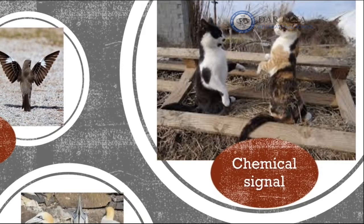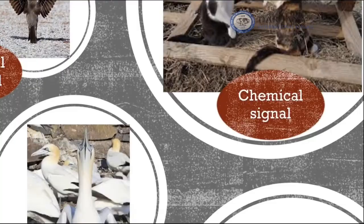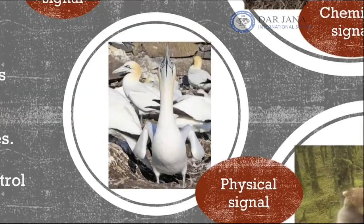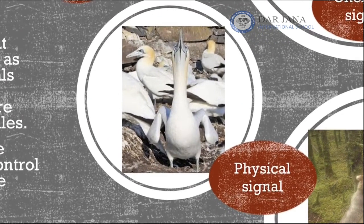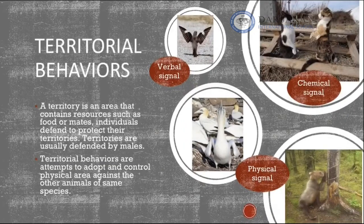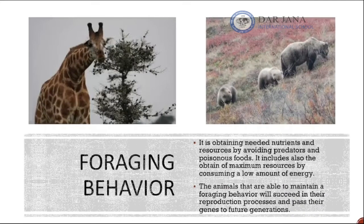Another type is chemical signals, used by cats and cheetahs. They mark their territories using chemicals like urine, urinating around their area so other animals cannot cross it. Bears use physical signals by marking trees, letting other animals know the place is taken. Gannets also mark their territory by fighting in a colony to maintain their space.